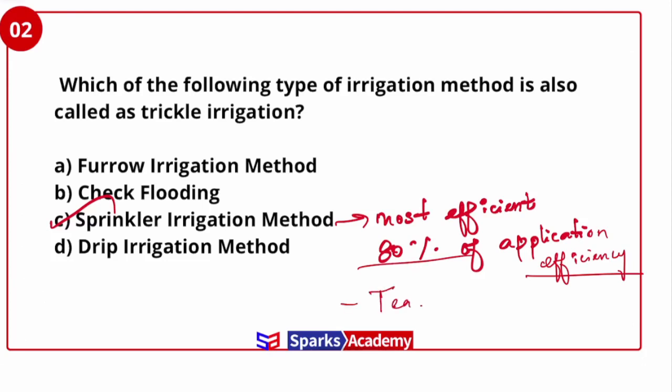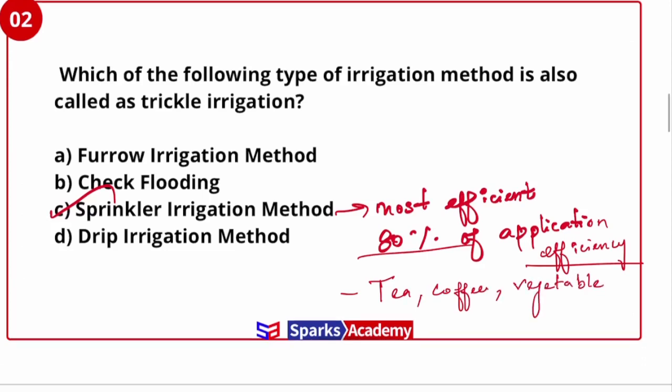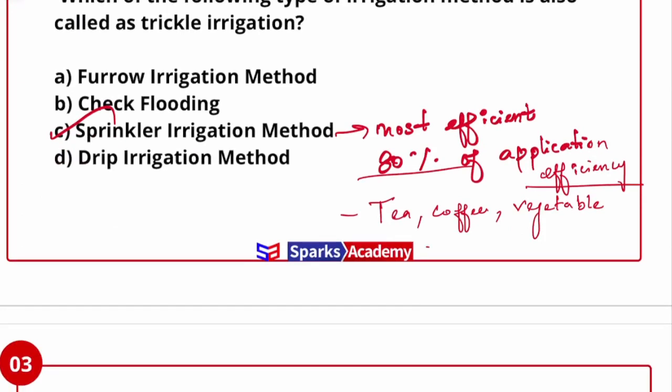Sprinkler irrigation is mostly used for crops like tea, coffee, and vegetables. Remember: for rice and jute, sprinkler irrigation is not preferred. So the question may ask which method of irrigation should NOT be used for rice — the answer would be sprinkler irrigation, since rice and jute are not suited to it.